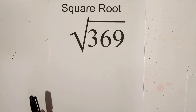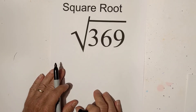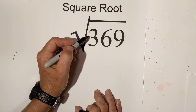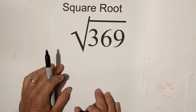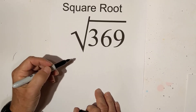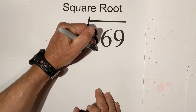Welcome to MooMoo Math and Science. In this video, let's find the square root of 369. The square root of 369 is an irrational number, but we can simplify it. I'll use a factor tree.